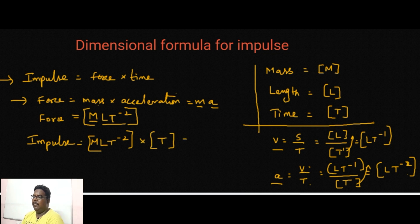One T I am introducing. If the bases are the same, the powers can be added. M L T power minus 2 plus 1, that equals M L T power minus 1 with bracket. This is the dimension formula for impulse.